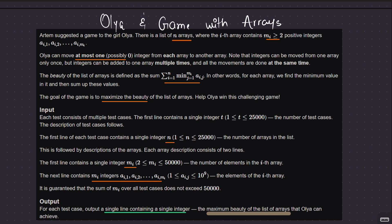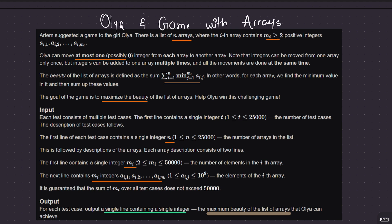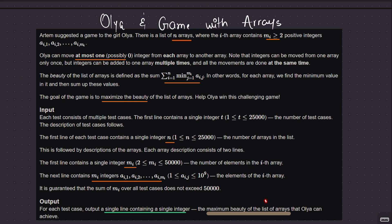In each array we want the minimum element to be as big as possible — that's what maximizing beauty means. The input is simple: we are given n arrays of varying sizes. We want to print the maximum beauty we can achieve after some rearrangement. We are not asked for the rearrangement itself, just the maximum beauty value.